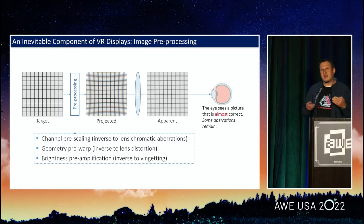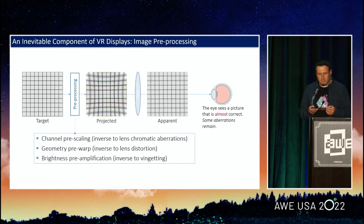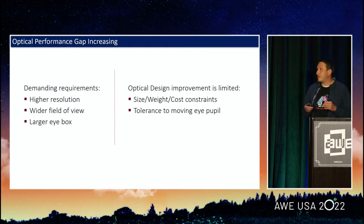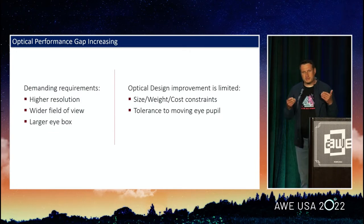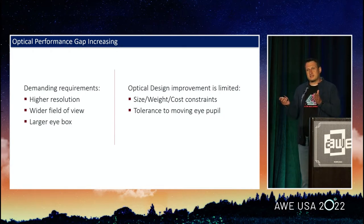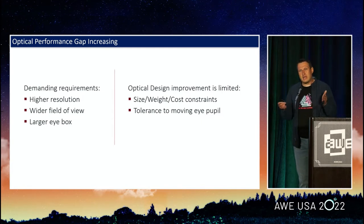As a result, the eye sees almost the correct picture. The word 'almost' is quite important here because, in the first place, not everything can be corrected. And with the more and more demanding specifications — high resolution, wider field of view, larger eye box — and the optical design constraints still being in place, so we cannot make the optical system bigger, we cannot make it heavier.